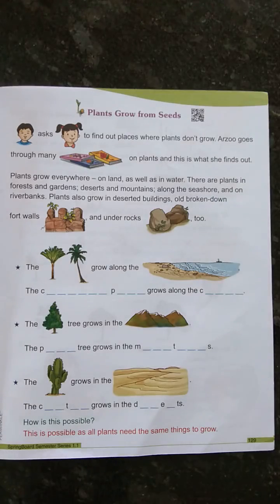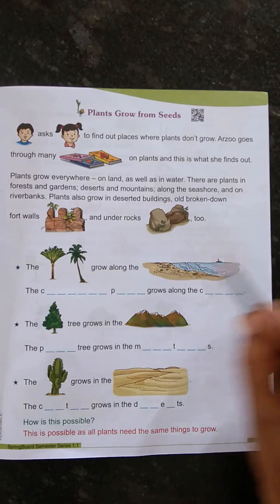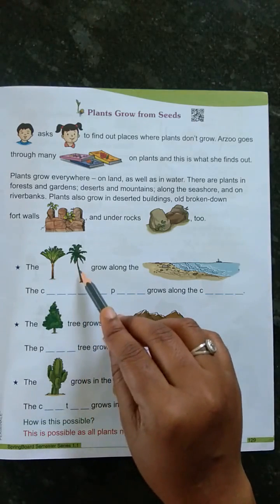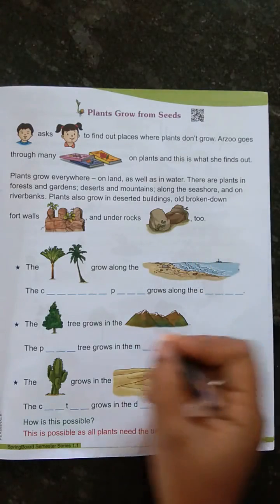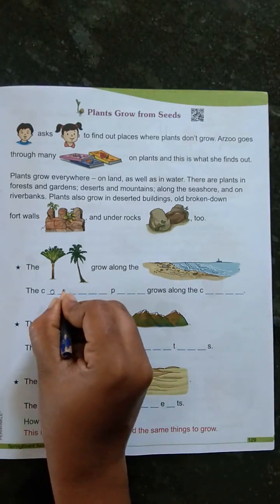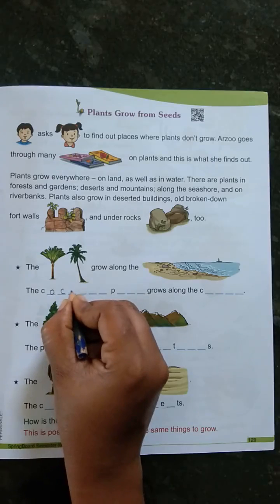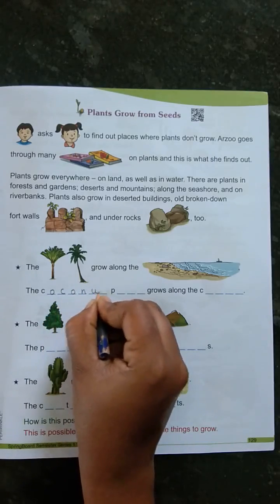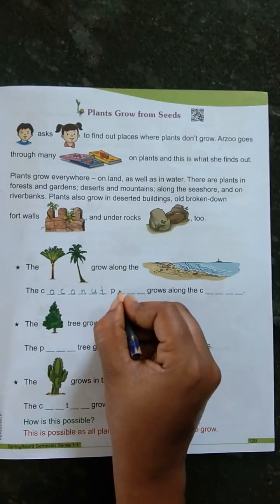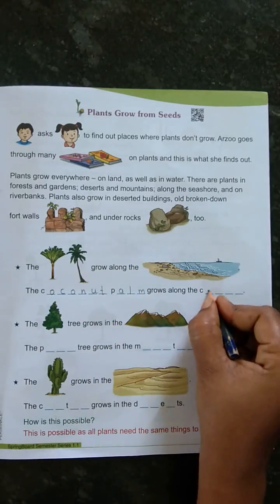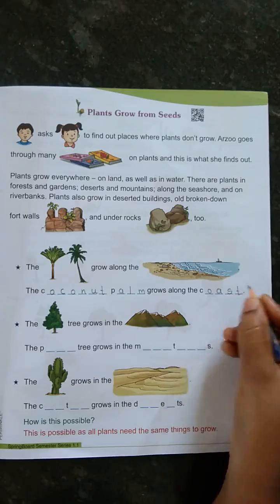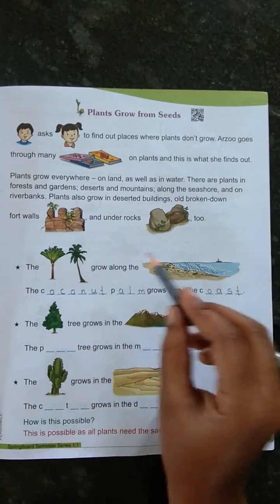The coconut palm grows along the coast. These are coconut palm trees — they grow along the coast.